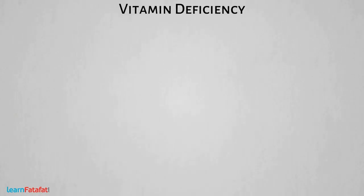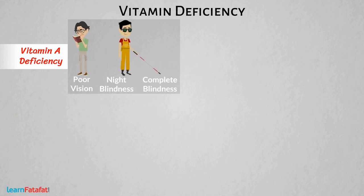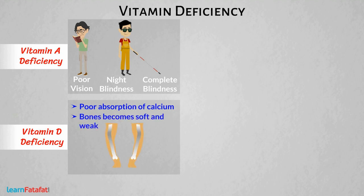Vitamin Deficiency. Vitamin A deficiency causes poor vision. It may cause night blindness or even complete blindness. Deficiency of vitamin D causes poor absorption of calcium, and so bones become soft and weak. This disease is called Rickets.